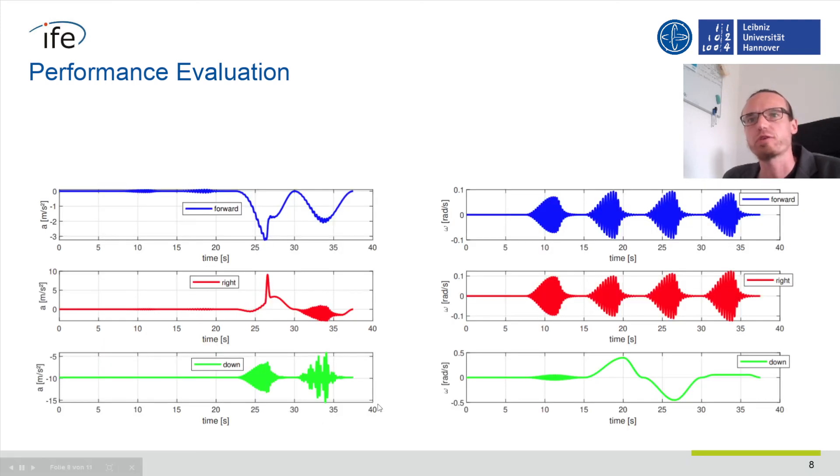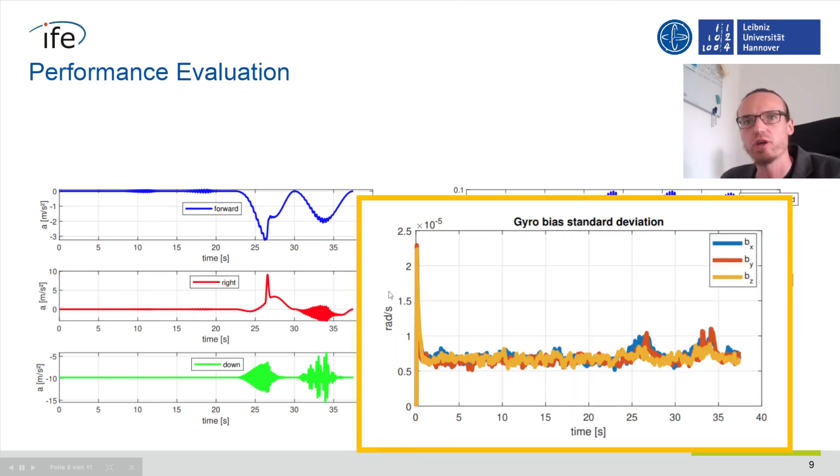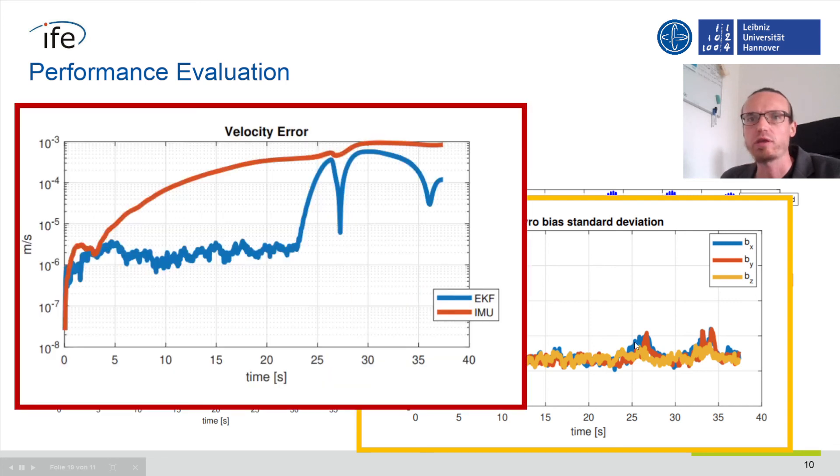However, if we have a scenario with large dynamics involved, like this acceleration spike at 26 seconds, you can see that the accuracy of the gyro bias estimate is decreasing. Furthermore, the velocity estimate is getting much worse after we initially had an improvement like in the smooth example from before. The implications of this are elaborated and discussed in the paper.